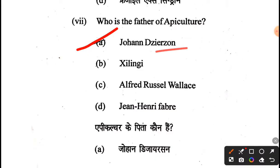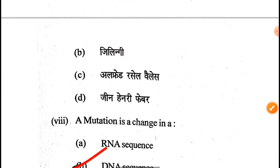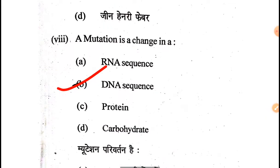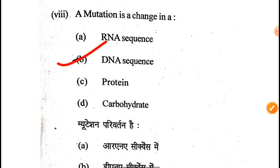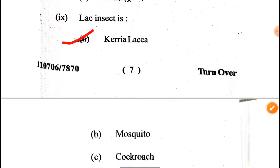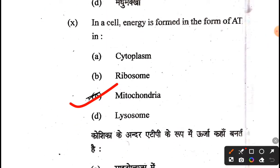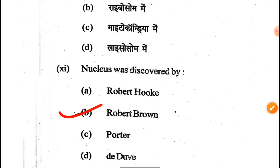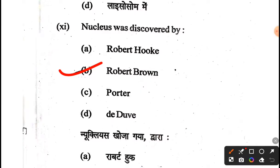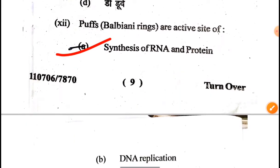The father of apiculture is Johann Dzierzon. Next, a mutation is a change in a DNA sequence. The lac insect is Kerria lacca. In a cell, energy is formed in the form of ATP in the mitochondria — we know the mitochondria is known as the powerhouse of the cell, and whatever energy is formed in our body is formed in the mitochondria itself. The nucleus was discovered by Robert Brown.